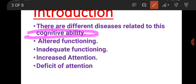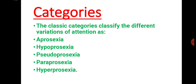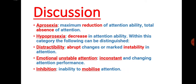There are different types of altered functioning of cognitive ability or attention. There are problems of inadequate function where the level of functioning is reduced. Next is increased attention - when attention increases, hyper increases, it also becomes a problem. Next is the deficit of attention. The main categories which classify the different variations of attention are aprosexia, hypoprosexia, pseudoprosexia, paraprosexia, and hyperprosexia. We are going to study each one of them one by one.